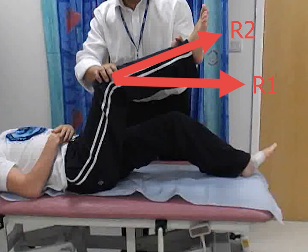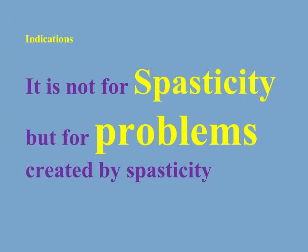The bigger the difference between R1 and R2, the more spasticity there is. Traditionally, botox is indicated if the difference is more than 20 degrees. A low difference or a difference of zero indicates a contracture, and botox injection usually does not work on contractures. Although botox works on spasticity, spasticity on its own is not an indication for botox — but problems caused by spasticity are an indication.